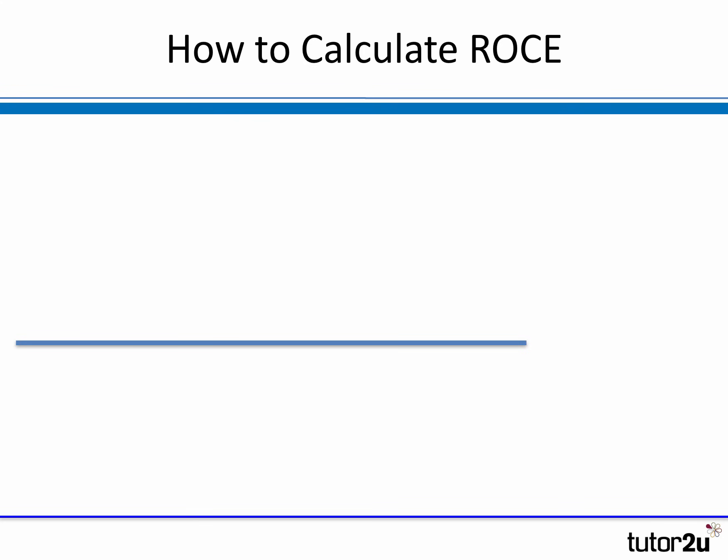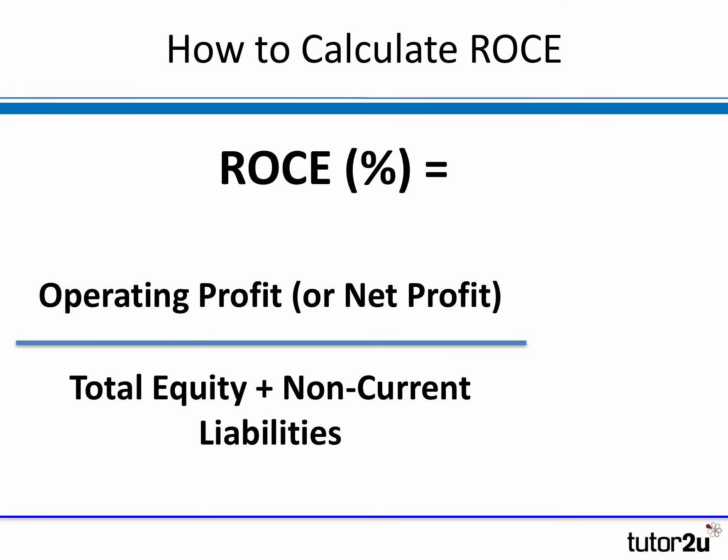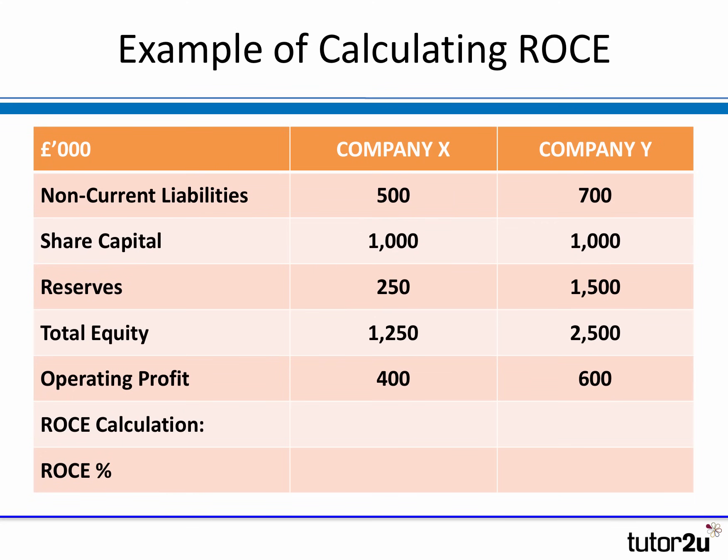So how do you calculate ROCE? It's expressed as a percentage. Strictly, the calculation is: you take the operating profit of the business — more commonly the operating profit, though occasionally you may be asked to use net profit — and divide it by the capital employed, which is defined as total equity plus non-current liabilities. Both of those figures come from the balance sheet, and operating profit comes from the income statement. You then multiply by 100 to express it as a percentage.